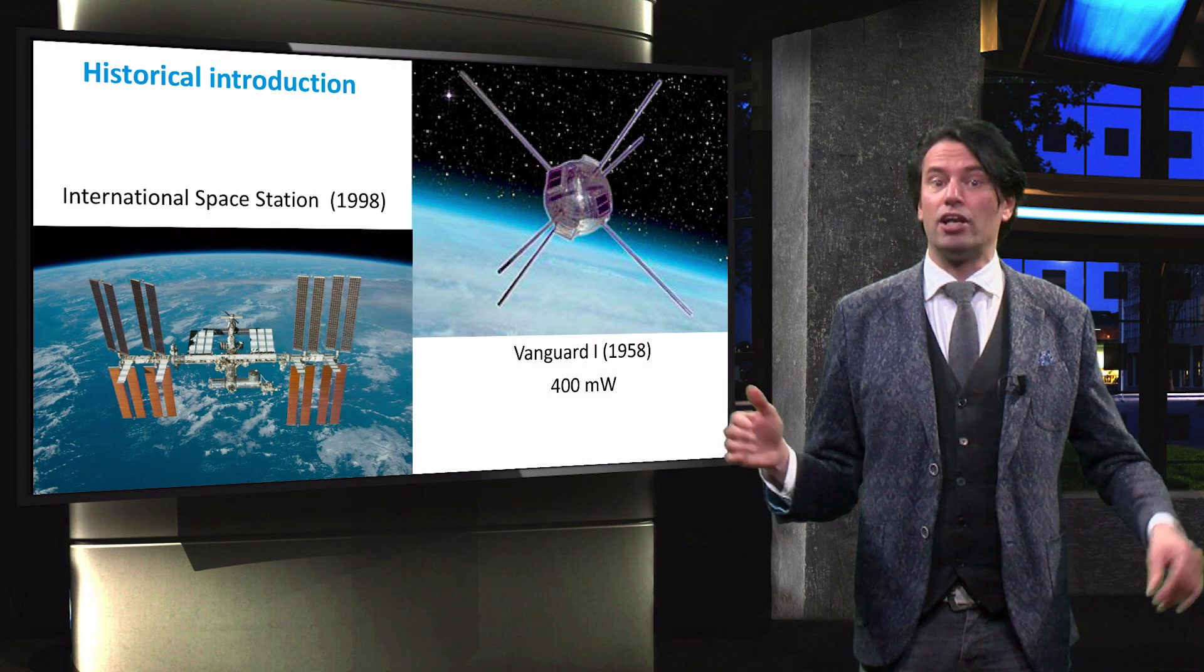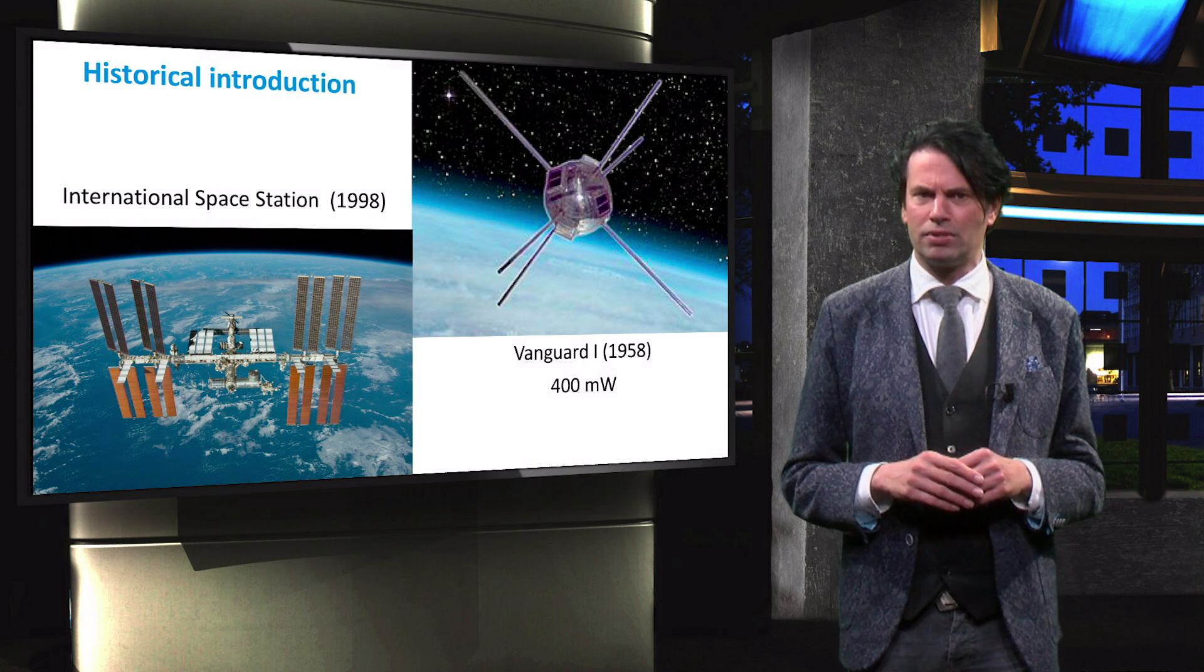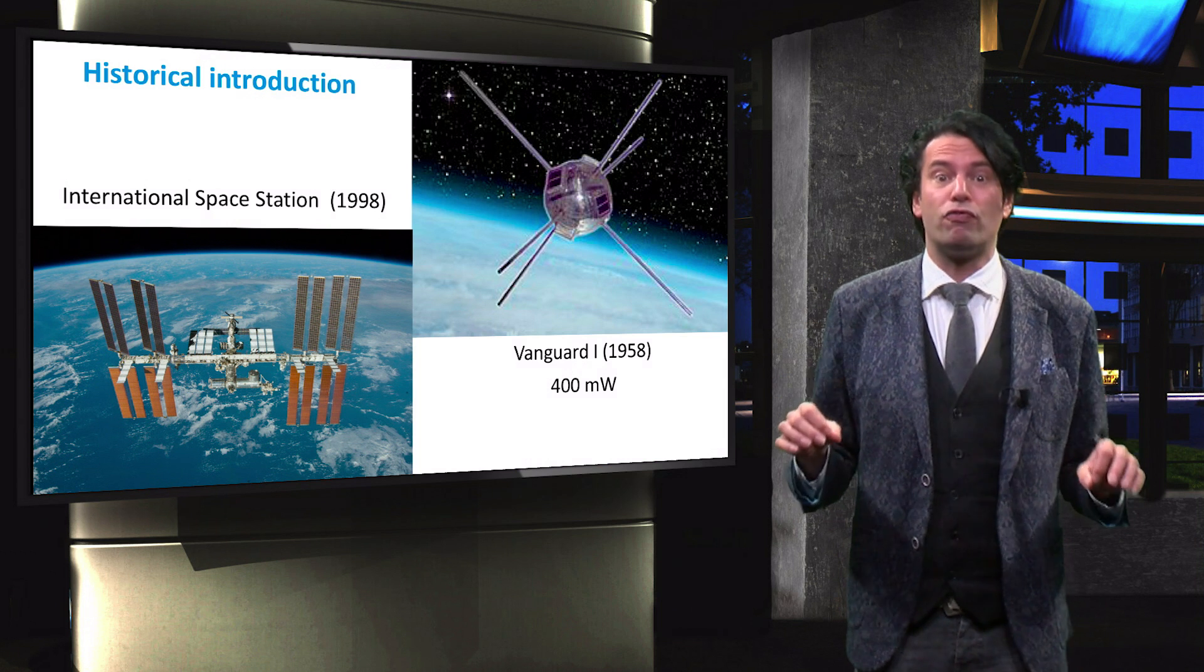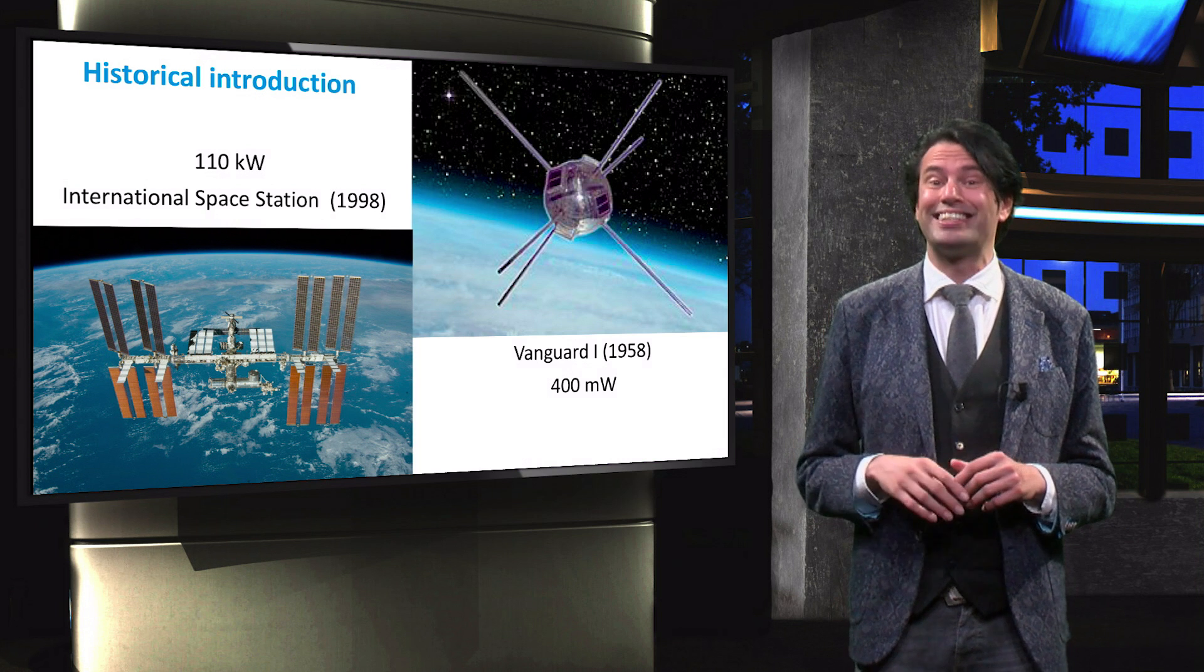Nowadays the largest PV power system present in space is the one of the International Space Station. The ISS features 8 solar arrays of around 400 square meters, generating an average power of around 110 kW.